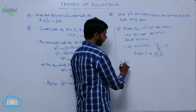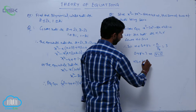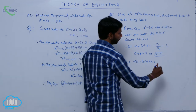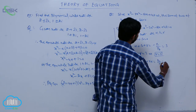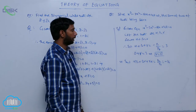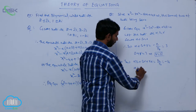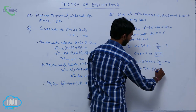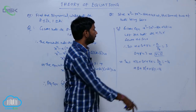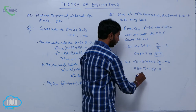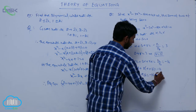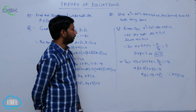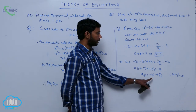Next, find S2. S2 is alpha beta plus beta gamma plus gamma alpha equals P2 by P0, which equals minus 16. Since gamma is common in beta gamma plus gamma alpha, we get gamma times (alpha plus beta) plus alpha beta equals minus 16. Since alpha plus beta equals 0, we get alpha beta equals minus 16. This is condition number one.